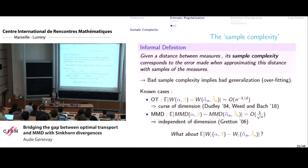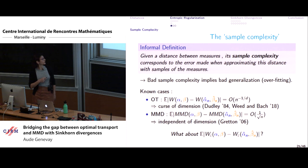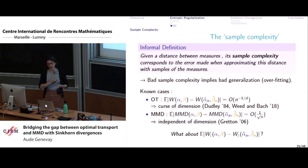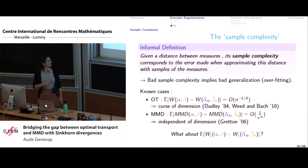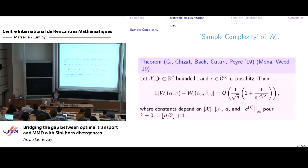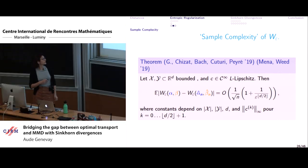Adding the entropy penalty solves the computational problem of optimal transport, but the sample complexity question remains. We know that for optimal transport, estimating the Wasserstein distance from N samples has a rate that degrades with dimension — specifically the lower-dimensional manifold dimension — which can be very bad. For MMD, sample complexity is O(1/√N). What can we say about regularized transport? We proved that regularized optimal transport has a sample complexity that interpolates between optimal transport and MMD at both ends.